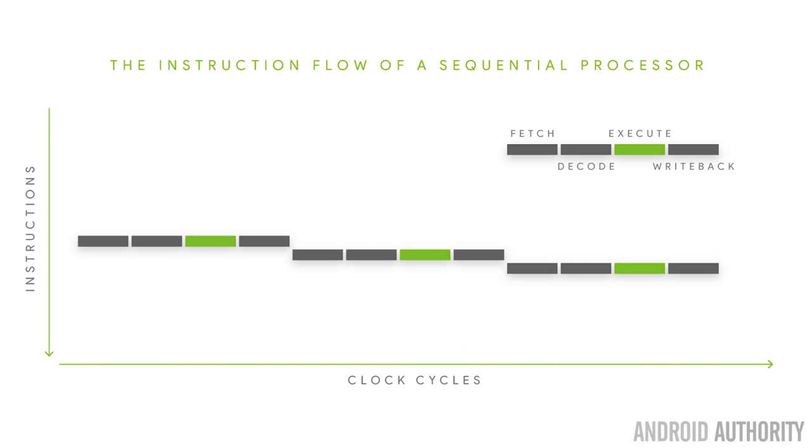Back then, processes were generally sequential, which meant it would fetch, decode, execute, and write back, and then go back and fetch the next one, and so on. That meant it took four clock cycles to do one instruction, so the instructions per clock cycle was in fact a quarter.